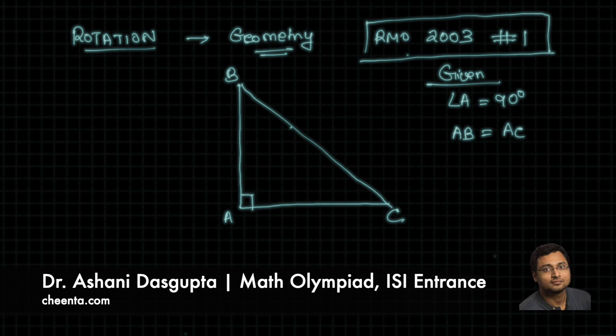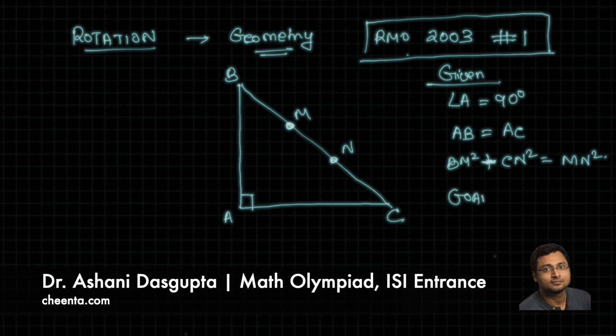Now, you choose two points M and N on the hypotenuse, such that BM squared plus CN squared equals MN squared. All this is given data. Now, we want to show that angle MAN is also 45 degrees. This angle MAN is 45 degrees. That's our goal.